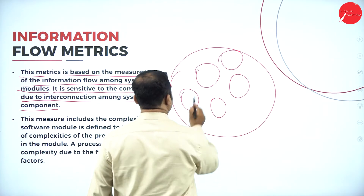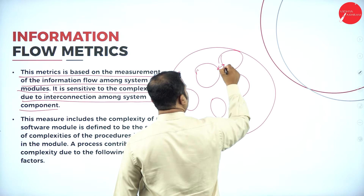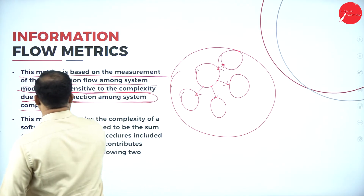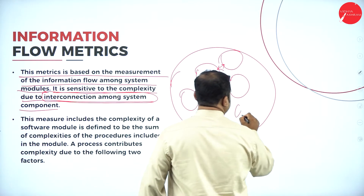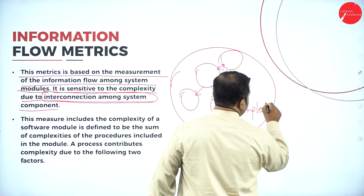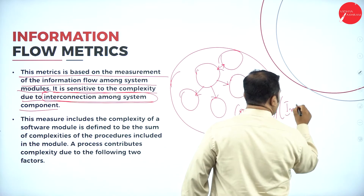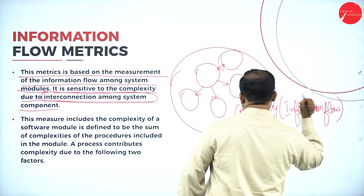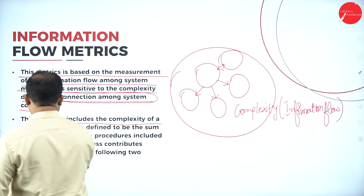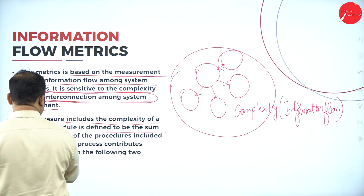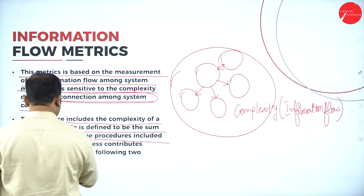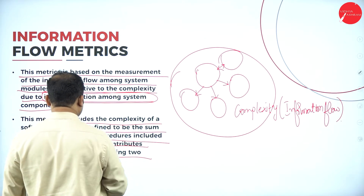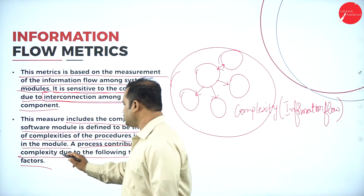The components which are closely tied together — that is, the information flow between different modules — is considered as an interconnection among system components, which is defined in terms of complexity. This is not just a complexity; it is information flow complexity. This measure includes the complexity of a software module defined by the sum of the complexities of the procedures included in the module.